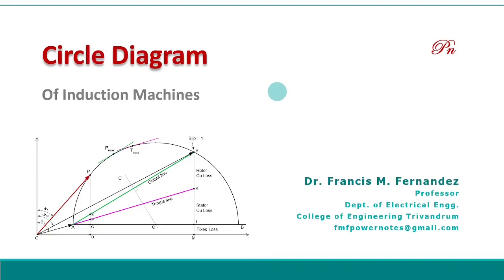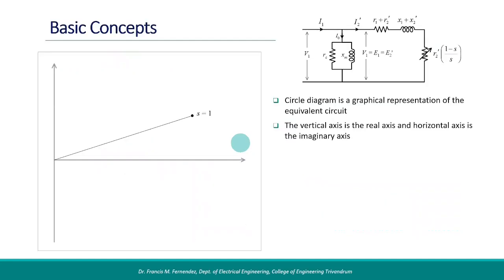The circle diagram is a commonly used method for performance analysis of induction motors. It is a graphical representation of the equivalent circuit. The principle of this method is that the locus of current of an induction machine follows a circle for all operating conditions. We plot the current in complex form for different values of slip s, with the real part on the x-axis and the imaginary part on the y-axis. Here, the vertical axis is the real axis and the horizontal axis is the imaginary axis.